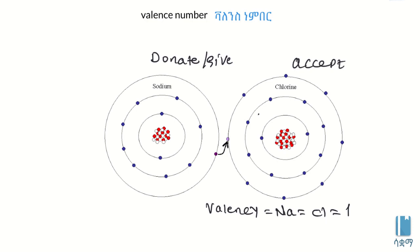However, for Group 5, to achieve the octet or eight electrons, they need to accept three electrons. For Group 6, which has six valence electrons, they need to accept two electrons to reach eight. Group 7 elements need to accept one electron. Group 7, like chlorine, fluorine, has seven valence electrons, so they need one more to achieve the octet state.